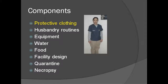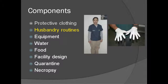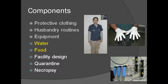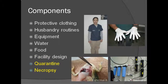The following general categories are important to consider when designing your biosecurity program: protective clothing including footwear, foot baths, dedicated clothing, and gloves; husbandry routines designed to reduce pathogen transmission risk; equipment and cage furniture; water sources; food sources; facility design aspects including pest and amphibian proofing; quarantine of incoming animals; and necropsy of animals that die in the collection.